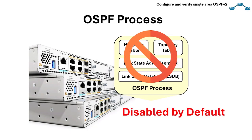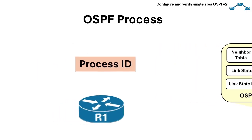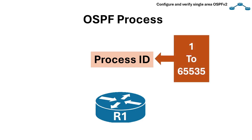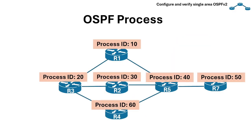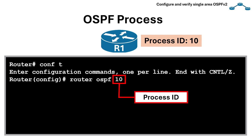By default, the OSPF process is disabled on all Cisco IOS and IOS XE devices. To enable OSPF, a process ID is required. The process ID is locally significant and it distinguishes different OSPF processes running on the same router. It can be any integer from 1 to 65535. The process ID doesn't need to match all routers within the network. We can use the command 'router ospf 10', where 10 is the process ID.